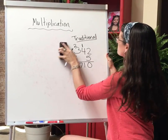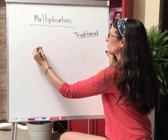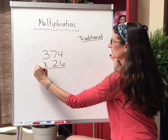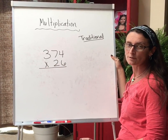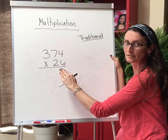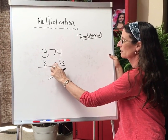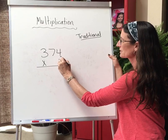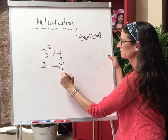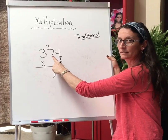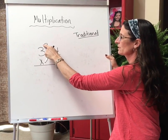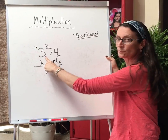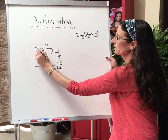So let's say I have the problem 374 times 26. What I've told my students is pretend that the 2 is not even there — it's gone. So I can do my traditional multiplication right now. 6 times 4 is 24. 6 times 7 is 42, 43, 44. And 6 times 3 is 18, 19, 20, 21, 22.